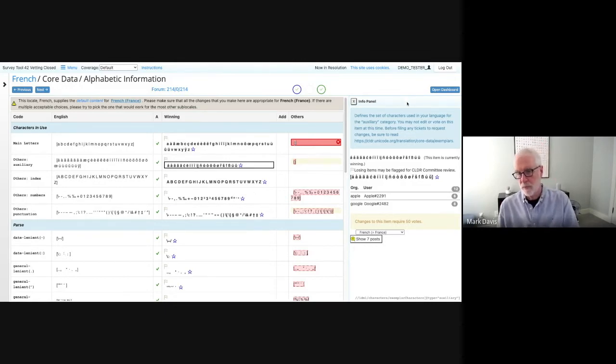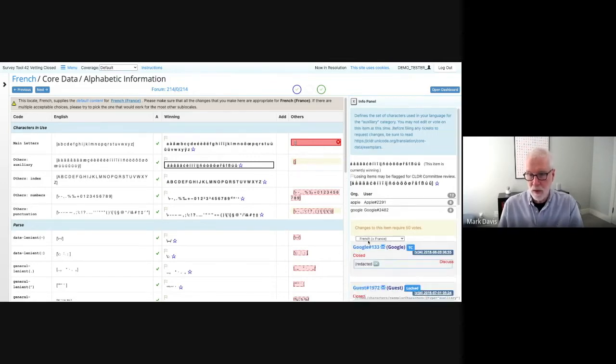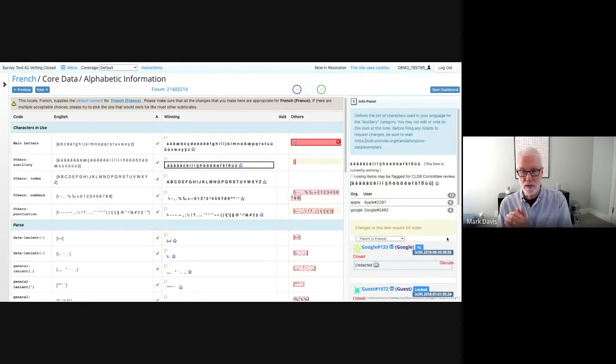Over on the right, we see an info panel, and this is a panel of information that helps the translator go through the process of adding or changing data. Here we see some examples, and we see the voting record. In this case, the data has been redacted for this presentation. We also see what's called a forum, and people can make various posts, they can request changes of other people. This is a mechanism that the translators use to come to consensus about the best choices. And if you look over here, each of these can have multiple choices that are built up during the process of coming to the consensus on the best choice to be given.